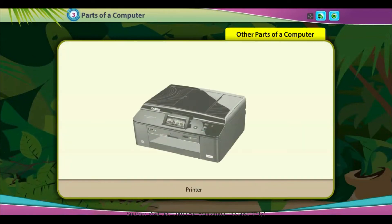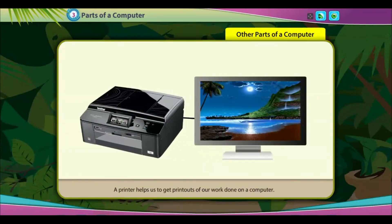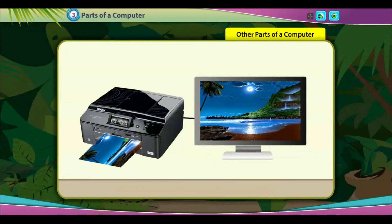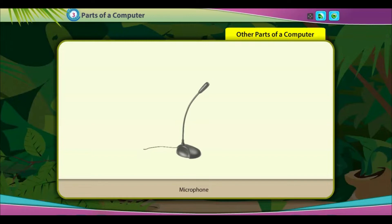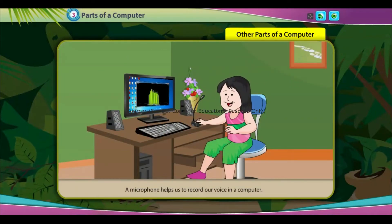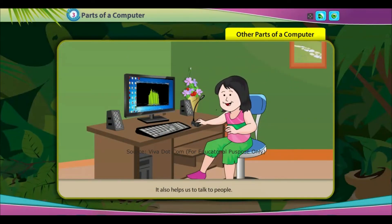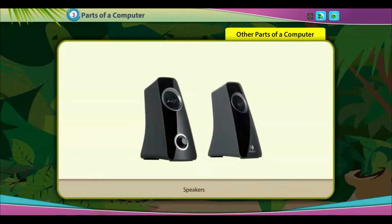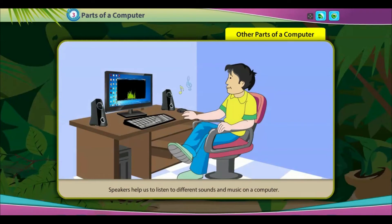Printer: a printer helps us to get printouts of our work done on a computer. Microphone: a microphone helps us to record our voice in a computer. It also helps us to talk to people.